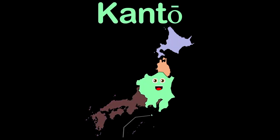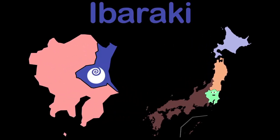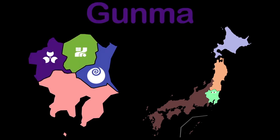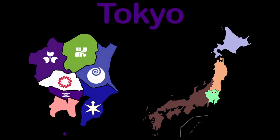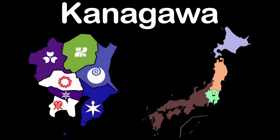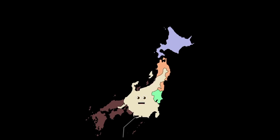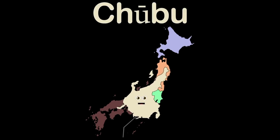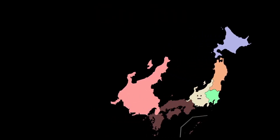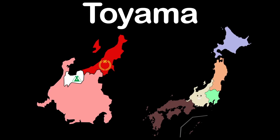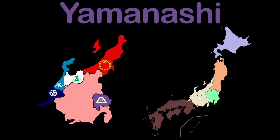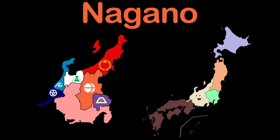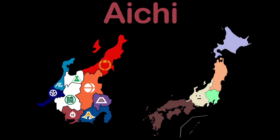I am Kanto, a region in the east with 7 prefectures: Ibaraki, Tochigi, Gunma, Saitama, Chiba, Tokyo, and Kanagawa. Chubu is a large region with nine prefectures: Niigata, Toyama, Ishikawa, Fukui, Yamanashi, Nagano, Gifu, Shizuoka, and Aichi.